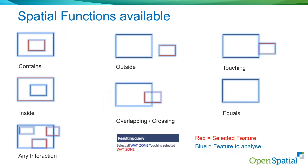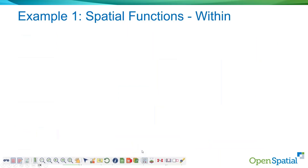Let's look at some examples. In Enlighten, the Spatial Functions menu pulls up a task pane. The functions are color-coded — red is the feature you have selected, blue is the analytic applied. So for 'contains' in the top left, the red is your feature and blue shows what contains it, or the opposite for 'inside.' There's also outside, touching, overlapping, crossing, equals, and any interaction. The dialog gives you a color-coded summary as you run through them.